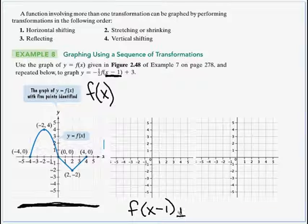So we're going to go one unit to the right. Every point gets shifted over one unit. This negative 4, 0 is now negative 3, 0. Negative 2, 4 is now negative 1, 4. The origin point got shifted over to 1, 0. 2 comma negative 2 is now 3 comma negative 2. And 4 comma 0 is now 5 comma 0. So everything got pushed to the right one unit. And I'll connect my dots with my parabola and then my little triangle down here.